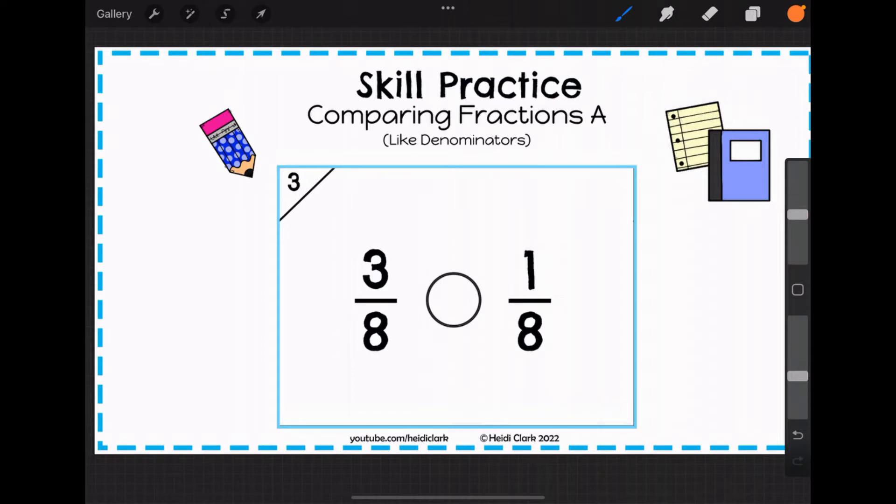Let's compare the fractions three-eighths and one-eighth. We're trying to figure out which one is bigger. What's the same about these two fractions? The eight. These two fractions have the same denominator or like denominators.